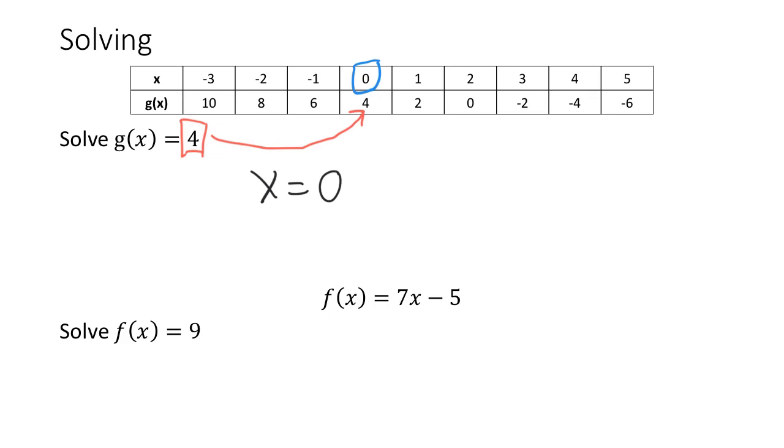In the second example, we are asked to solve f of x equals 9. Just like the last example, 9 is an output of the function. We need to incorporate it into the symbolic statement f of x equals 7x minus 5. It can't go in for x because then it would be playing the role of an input. In order to play the role of an output, it needs to go where the output of the function is produced.